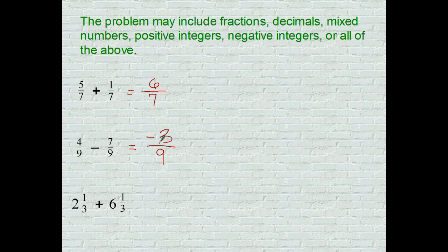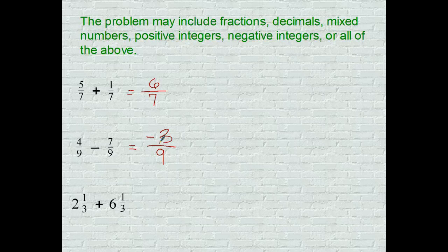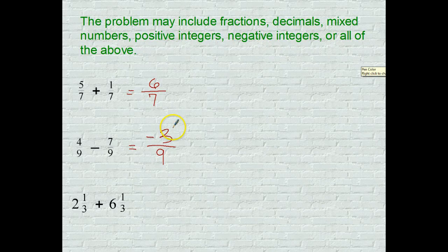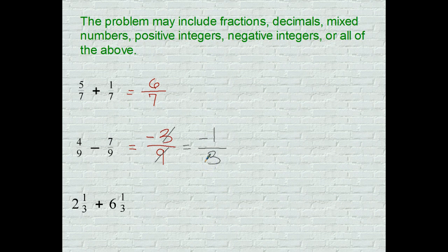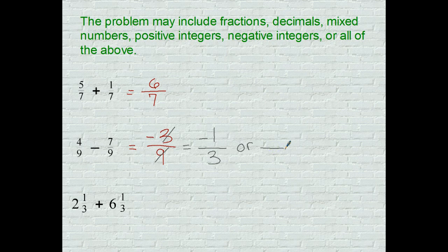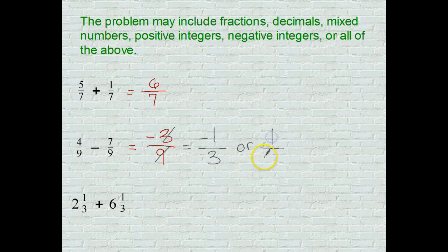Negative three. Check to see if it's simplified. It is not, so what number goes into both three and nine evenly? That would be a three. So three goes into three negative one times, and three goes into nine three times. Just a reminder, you can take this fraction and write it in three different ways: you can have the negative in the top with the one, you can have it in the bottom with three, or you can have it right in the middle.